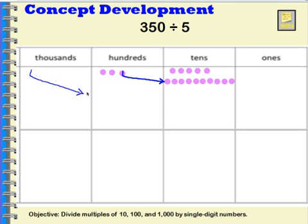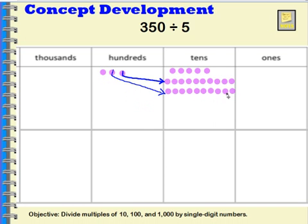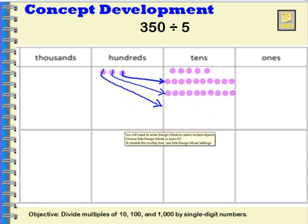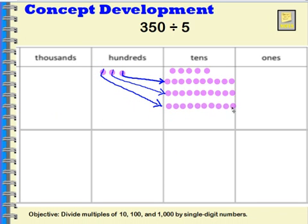I'm also going to do that with the second hundred — draw a line through it and trade it in for ten tens. And then for my last hundred, I'll draw a line through it and trade it in for ten tens as well. So now, instead of having three hundreds, I have ten, twenty, thirty, thirty-one, thirty-two, thirty-three, thirty-four, thirty-five. I have thirty-five tens.